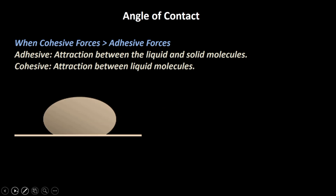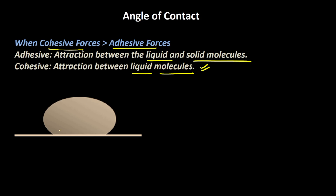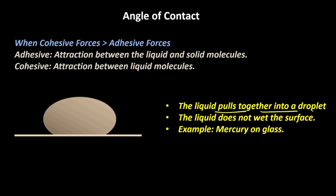Now let's understand what happens when the cohesive forces are stronger than the adhesive forces. That would mean the attraction between the liquid molecules is stronger than the attraction between the liquid and solid molecules. In that situation, the liquid will take this sort of shape — the liquid pulls together into a droplet. The liquid does not wet the surface, and the example would be mercury on glass.